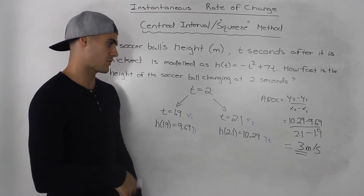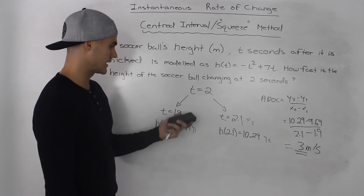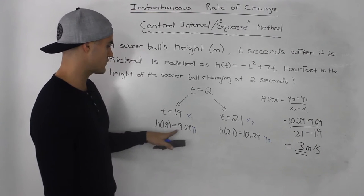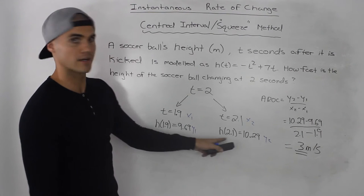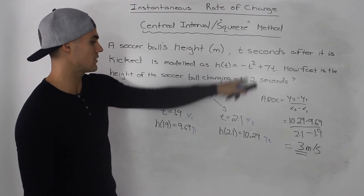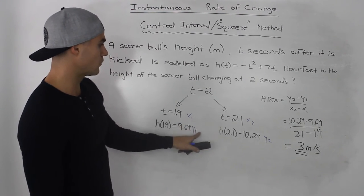So following the same procedure that we've been doing in the previous videos, take these two t values, find what the h value would be. So we would plug this t value of 1.9 and 2.1 into the equation that we're given. x₁, y₁, x₂, y₂.